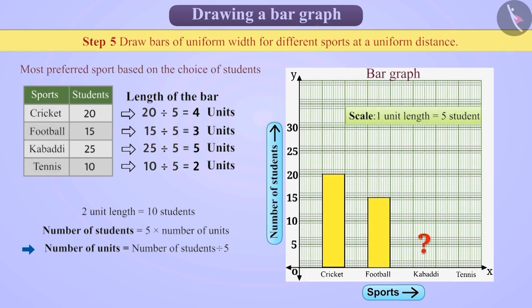Can you tell us how will we draw a bar for Kabaddi? Think for a while. Absolutely right! Once again, we will draw a 5 unit length bar of same width keeping a uniform gap between them. Similarly, for tennis, we will draw a bar of 2 unit length. This is how we obtain a bar graph.